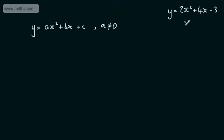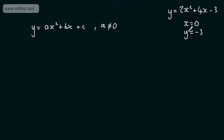If I put x = 0, a nice easy value, we can find out what y would be. 2 lots of 0 squared is 0, 4 lots of 0 is 0, minus 3. That means if x is 0, y is going to be -3. This is the one I chose — the independent variable — and this is the one that our equation gives us.